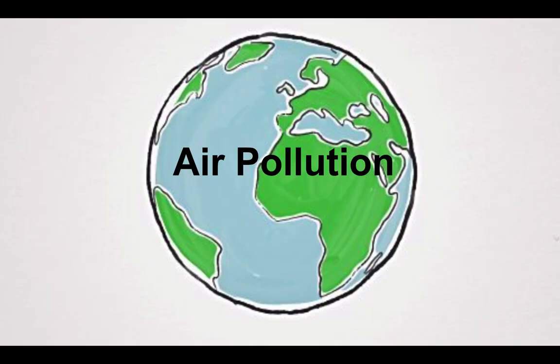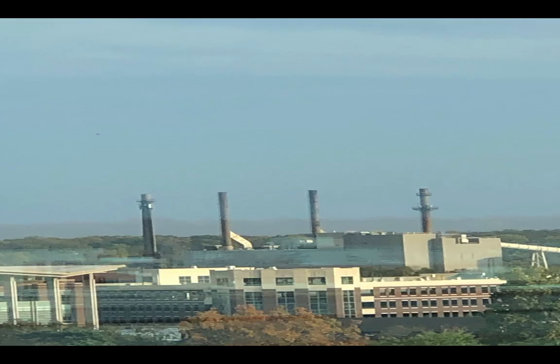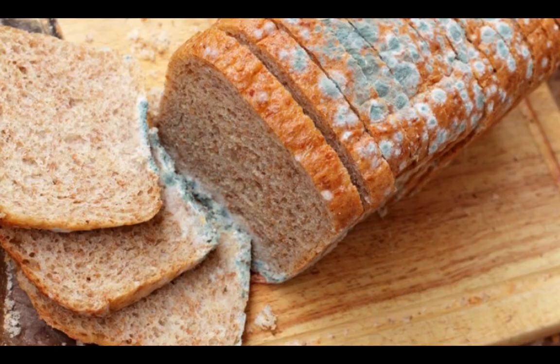Now let's discuss air pollution. It's when solid particles or gases contaminate the air. These causes are from car emissions, factories, dust and pollen, and mold spores. These can come from outside and inside.